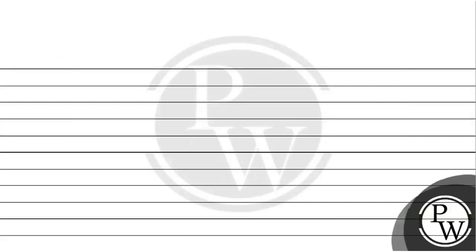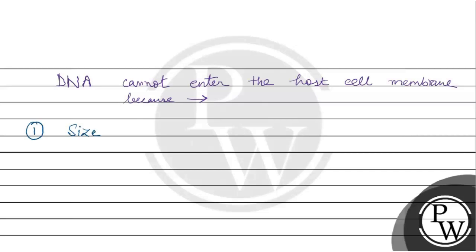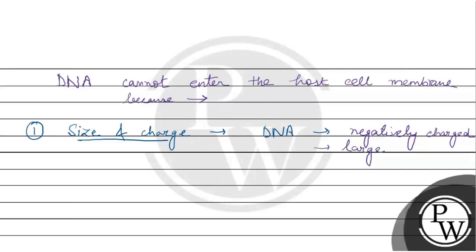Why DNA doesn't enter the cell? DNA cannot enter the cell membrane because, number one, of size — DNA is negatively charged and also very large. That's why the cell membrane selectively blocks such molecules.